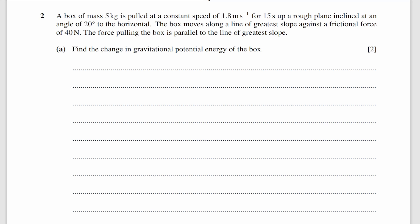Let's move on to question 2. I'm starting with a diagram. There is the box, and the mass of the box is 5 kilograms. The angle of inclination is 20 degrees. The box is being pulled at a constant speed of 1.8 metres per second, and the time is 15 seconds. We also have a frictional force of 40 newtons.